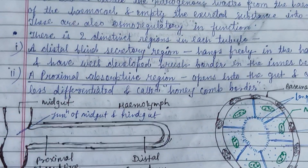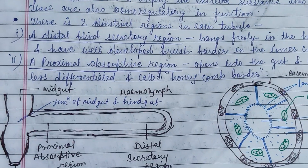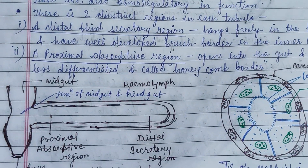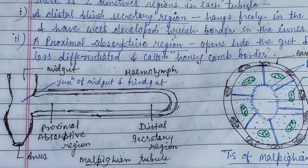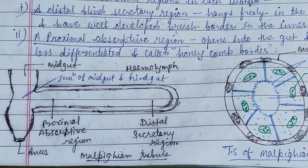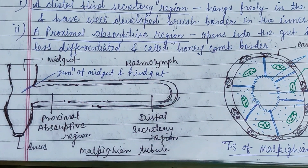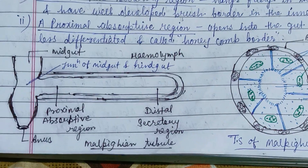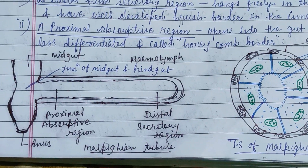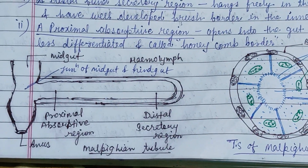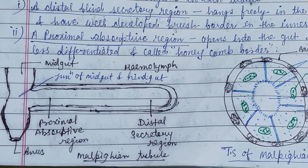There are two distinct regions in each tubule: the distal blind secretive region and the proximal absorptive region, as shown in the figure.